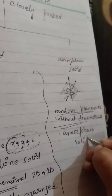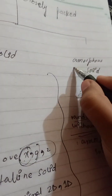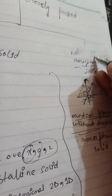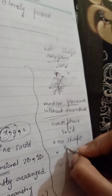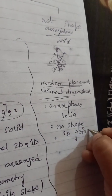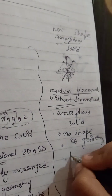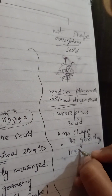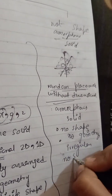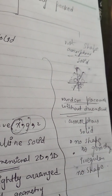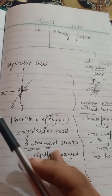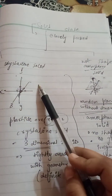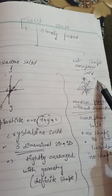That is called amorphous solid. 'A' means not, 'morphous' means shape, which means no shape. So they are having no shape just because they are not dimensional and they are having no geometry. They are irregular and they are having no shape. This was a little bit of introduction about the solid state and the types of solid — crystalline solid and amorphous solid.